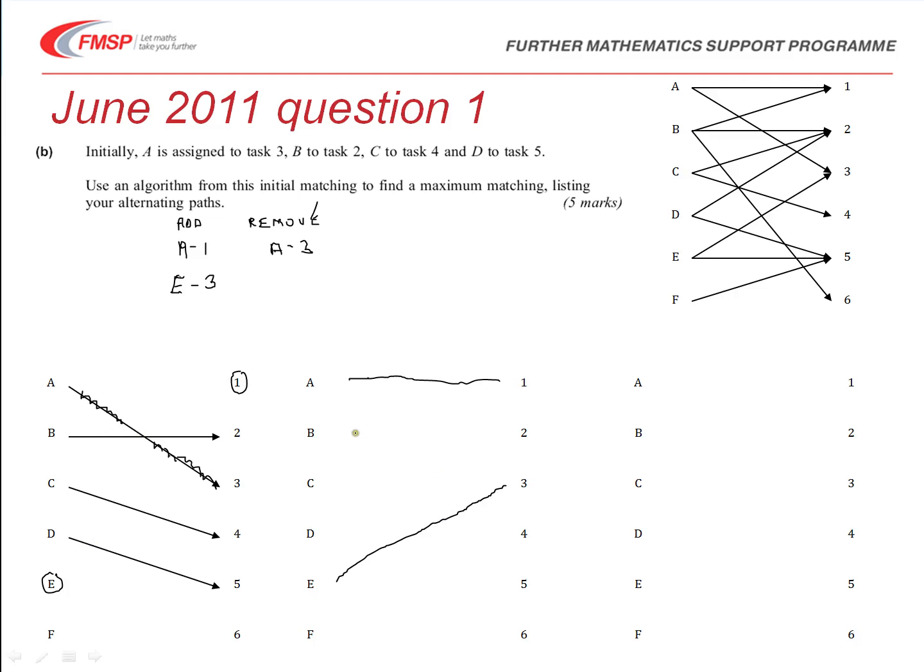And so, we've added in 2 new ones but removed 1. And previously, we've still got B2, C4 and D5. So, we can now draw in B2, C4 and D5. So, we've improved our matching but it is not a maximum matching. Because F and 6 are still not in our matching.